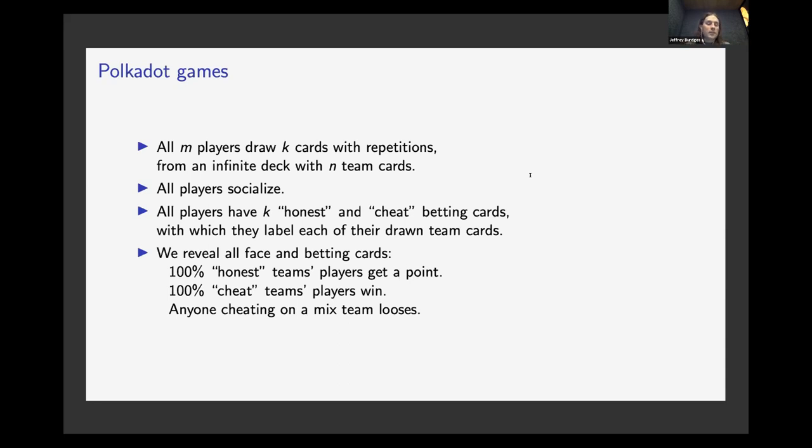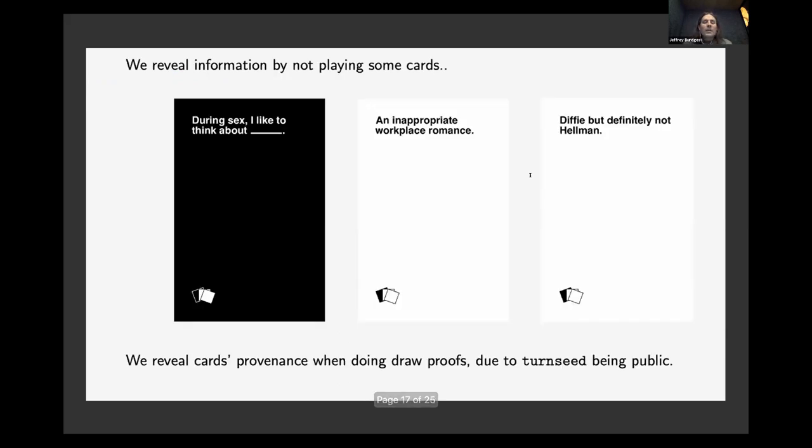And then once that happens, once everybody has labeled their team cards, then we reveal all these pairs of team and betting cards. And if a team has - so now this is when, if you're honest, this is when you learn who your teammates are and maybe you cheated and figured out who your teammates were in the socialization round. So if a particular team has a hundred percent honest, then all the players get a point, whatever a point is. But if anybody's cheating on a team that has mixed, then they lose. And in general, this last line here, this description of the finish of the game is a description of the finish of a sharding protocol. So something like what Ethereum 2 wants to use or what Byzcoin wants to - Brian Ford's Byzcoin paper does. So I'm not going to say too much more about this. This is not the most fun card game. Maybe we can try and design a more fun version of Polkadot.